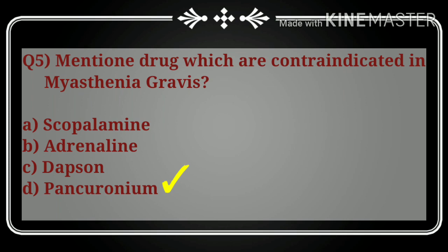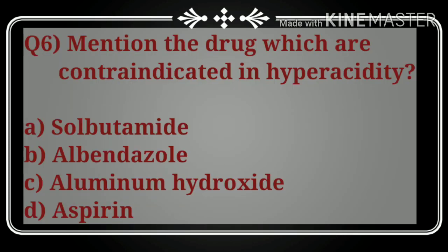Question number six: mention the drug which is contraindicated in hyperacidity. In a hyperacidity condition, which drug cannot be given or suggested to the patient? The options are: A) sulphamide, B) albendazole, C) aluminum hydroxide, and D) aspirin. The correct answer is option D, aspirin. Aspirin is contraindicated in hyperacidity because it further damages the mucosal layer and worsens the condition.